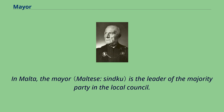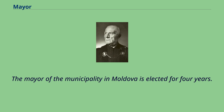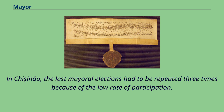In Malta, the mayor is the leader of the majority party in the local council. The members of the local councils are directly elected and collectively serve as a basic form of local government. The mayor of a municipality in Moldova is elected for four years. In Chișinău, the last mayoral elections had to be repeated three times because of the low rate of participation.